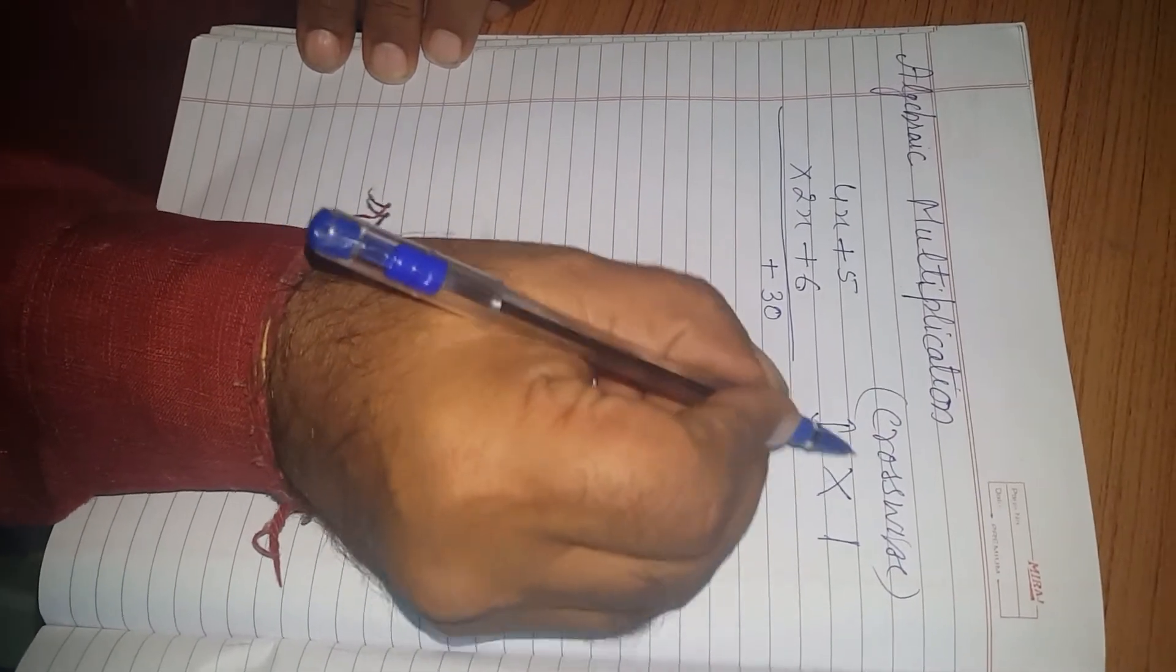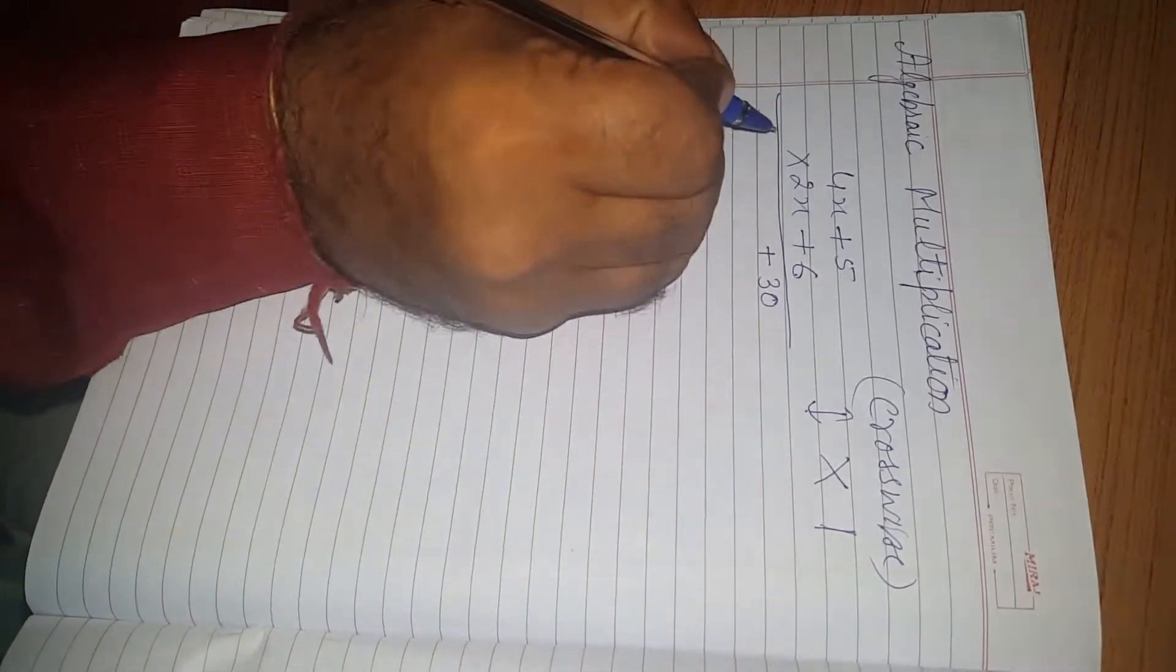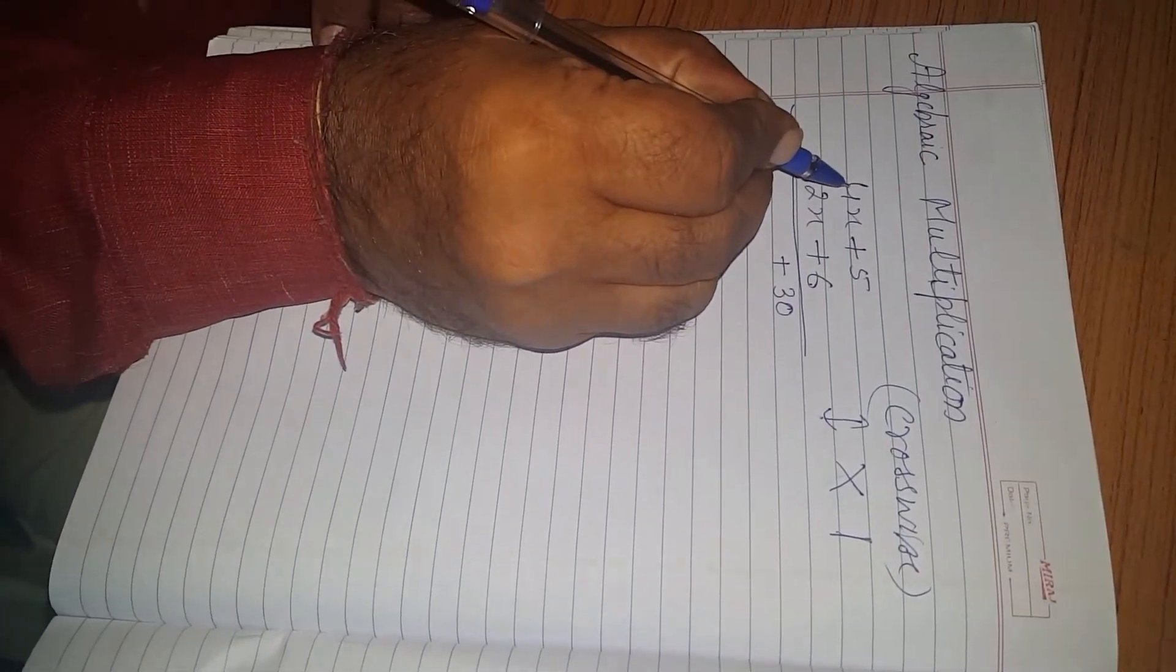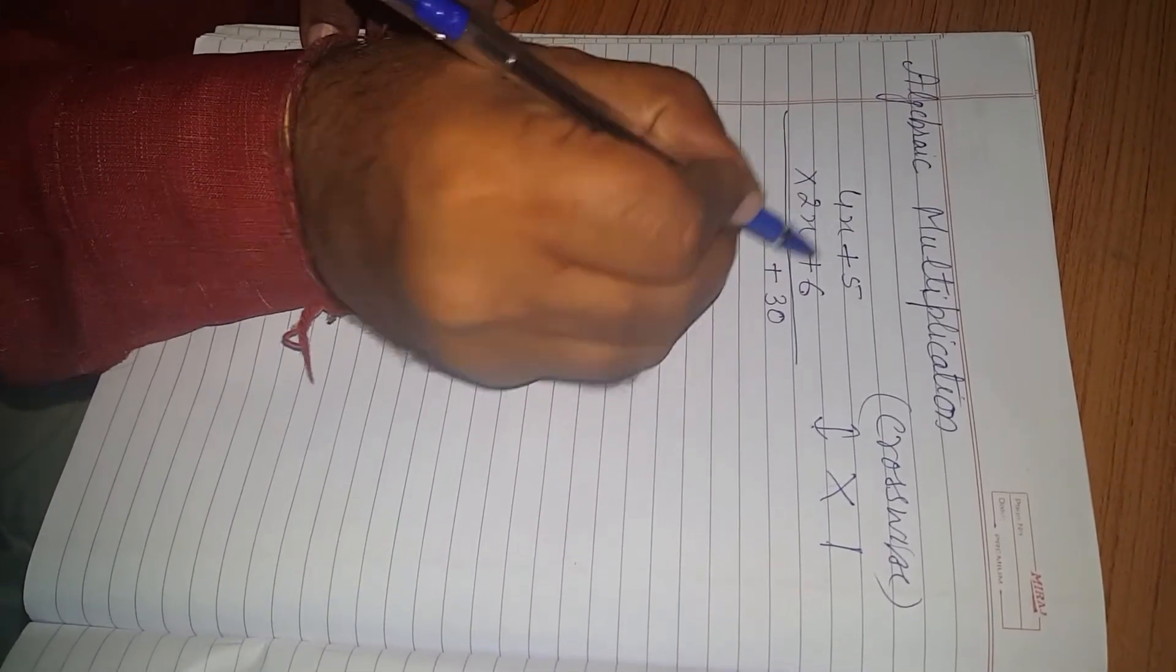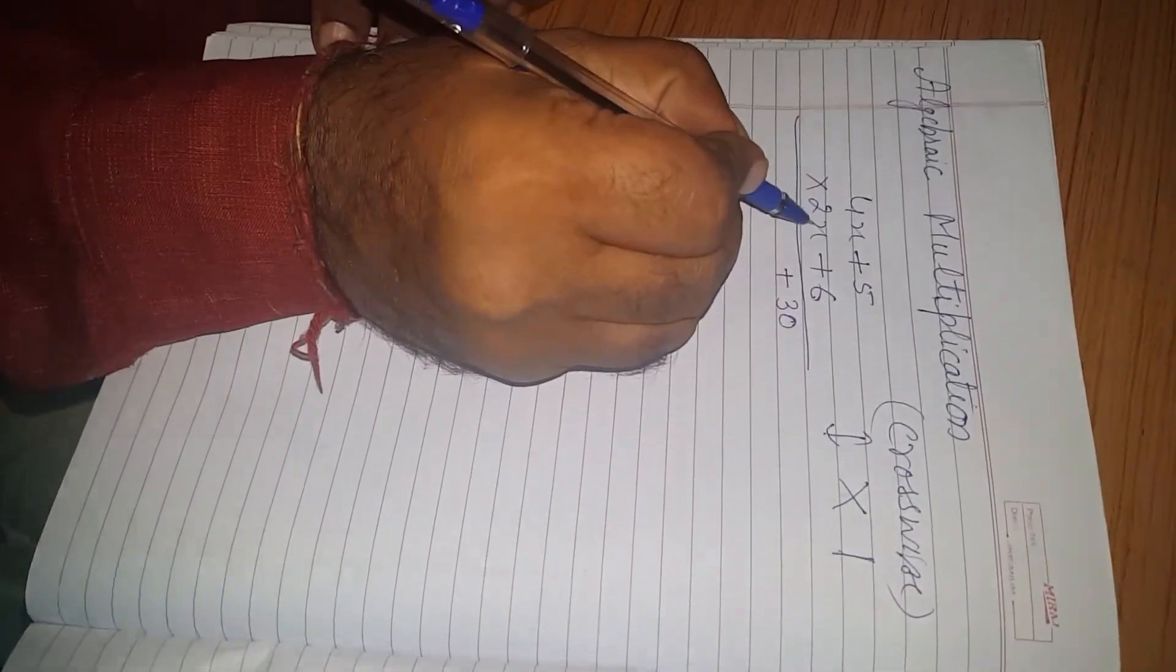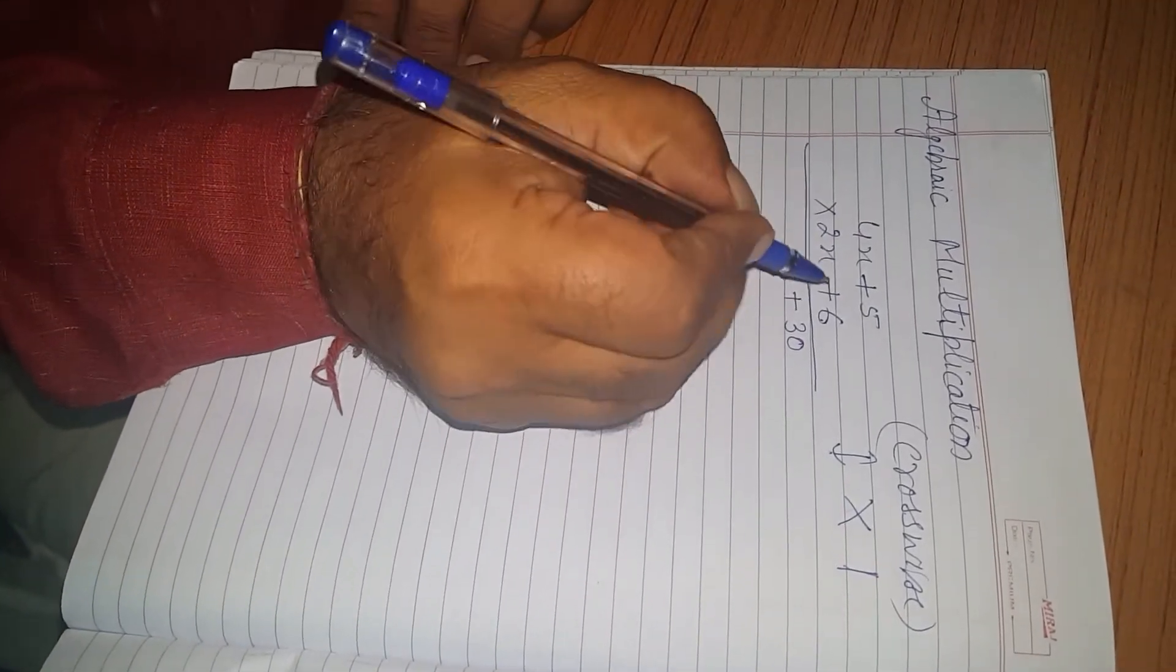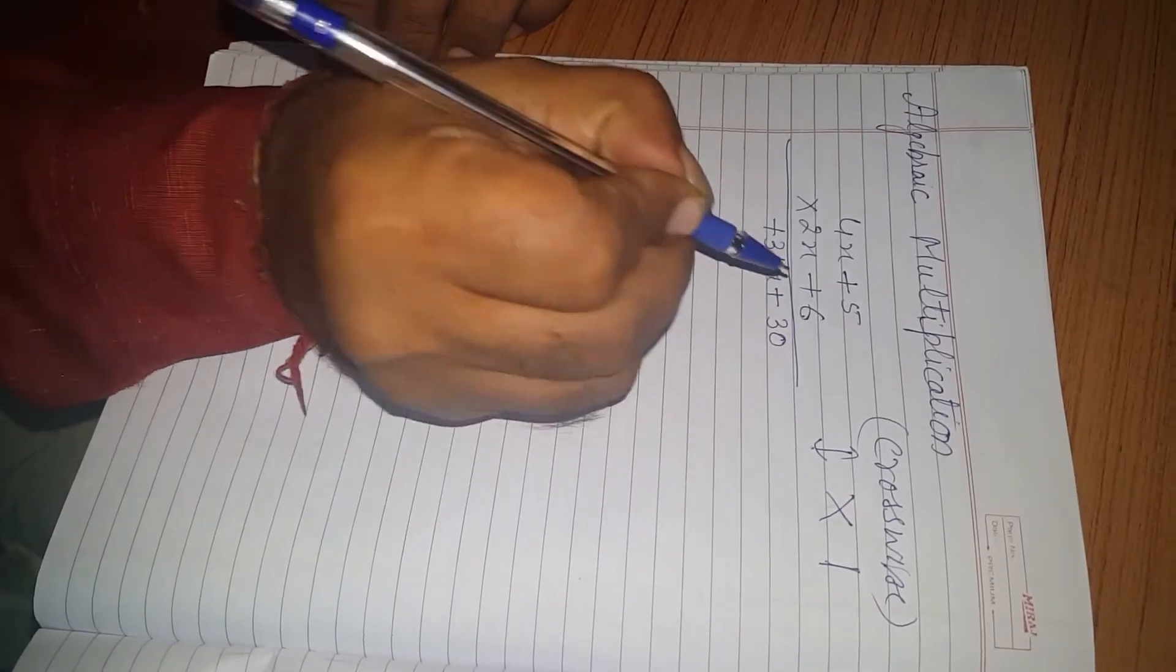Now, we will multiply Crosswise and add. Second step is Crosswise Multiplication and we add. Here, we do Multiply Cross like this. 4x multiply 6 means 24x. 5 into 2x is 10x. Now, 24x plus 10x is 34x.